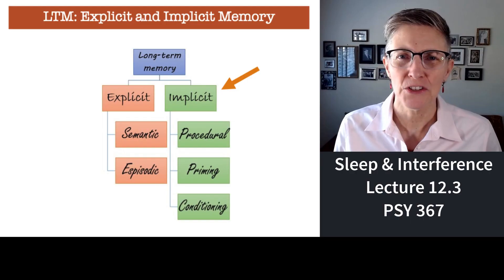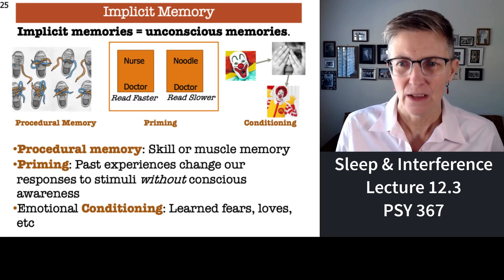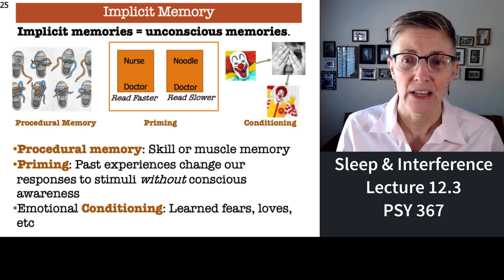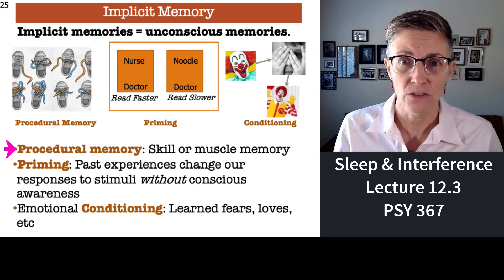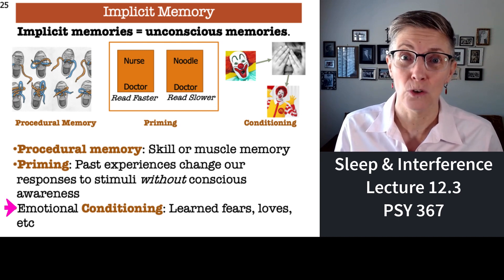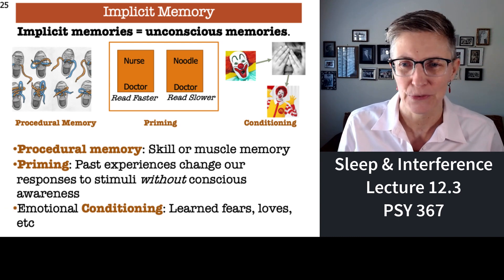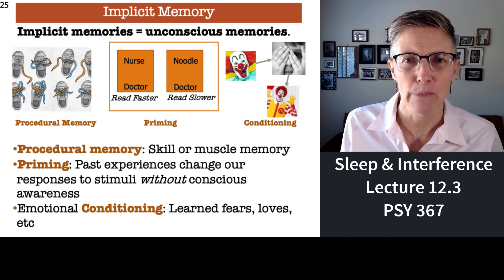Welcome back. Let's talk now about your unconscious or implicit memories. There are generally three categories of implicit memories: memories of procedures — that is, how to do things — priming, and conditioning, good old classical conditioning, especially as it relates to emotions. We're going to talk about each of these different types of memory in turn.